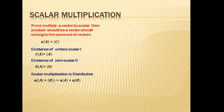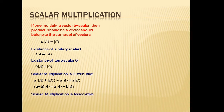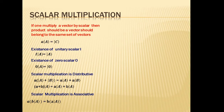Scalar multiplication must satisfy the distributive property. For example, scalar a multiplied by (vector a + vector b) equals (scalar a × vector a) + (scalar a × vector b). Similarly, (scalar a + scalar b) multiplied by vector a equals (scalar a × vector a) + (scalar b × vector a). Scalar multiplication is also associative — when multiplying scalars a and b by vector a, the order in which you apply the scalars doesn't affect the result.